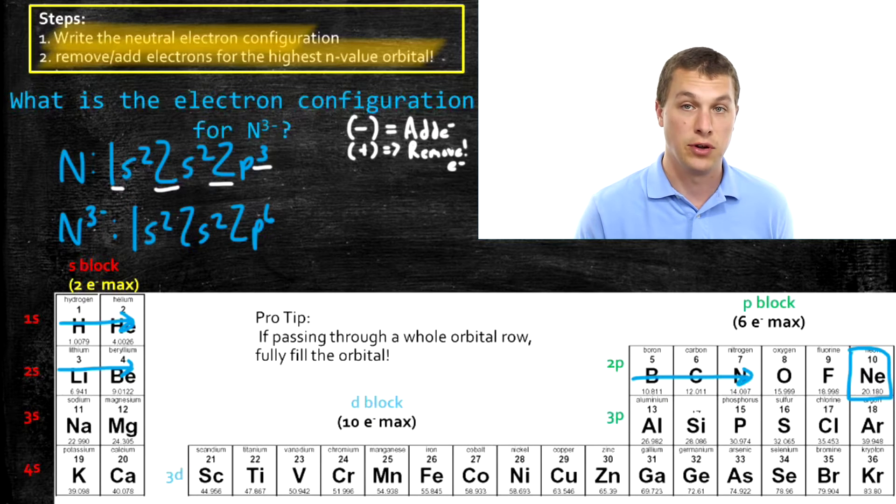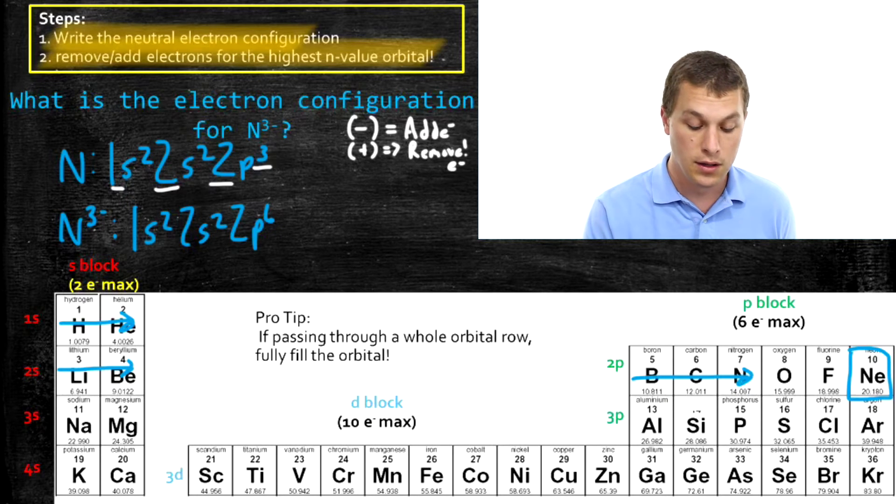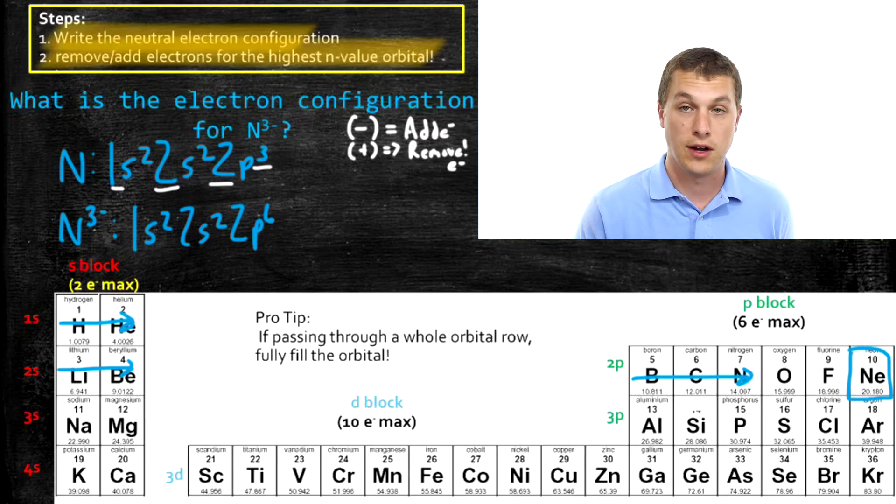And that's what gives them that extra stability. That's why nitrogen tends to form a three minus ion. So this is how you write the electron configuration. You just write the standard electron configuration for the neutral species. And then you add or remove electrons.